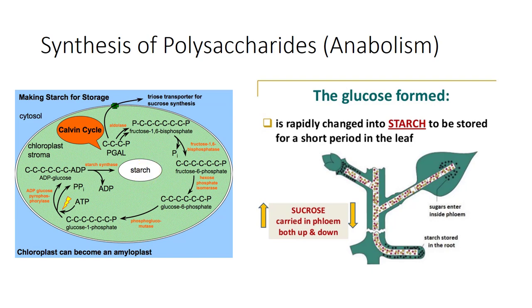At night, the starch is depolymerized back to glucose, which is transported from the chloroplast to the cytosol. Much of it is then converted to sucrose, loaded into the phloem, and transported to various parts of the plant that need the carbohydrate. By morning, most chloroplasts have little or no starch left in them.